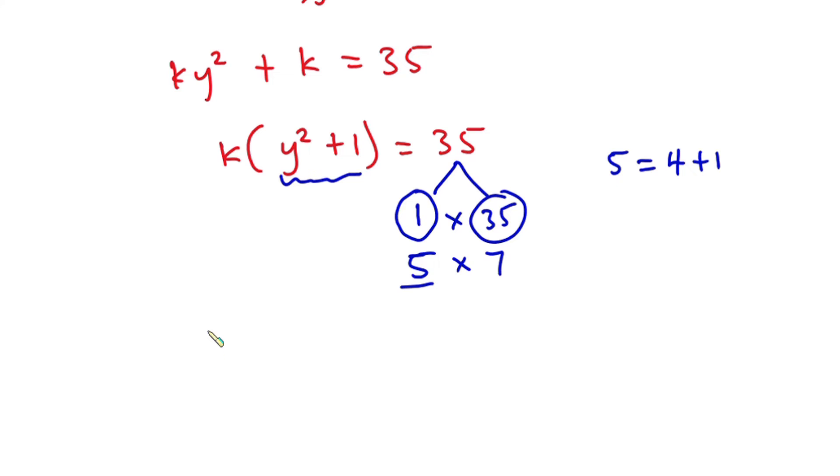So we can say that k equals 7, and then y² + 1 equals 5.